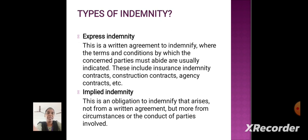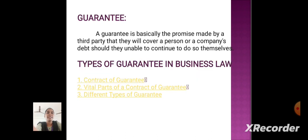Types of indemnity. Expressed indemnity: this is a written agreement to indemnify where the terms and conditions by which the concerned parties must abide are usually indicated. These include insurance indemnity contracts, construction contracts, agency contracts, etc. Implied indemnity: this is an implication of indemnity that arises not from a written agreement but more from the circumstances or the conduct of the parties involved.